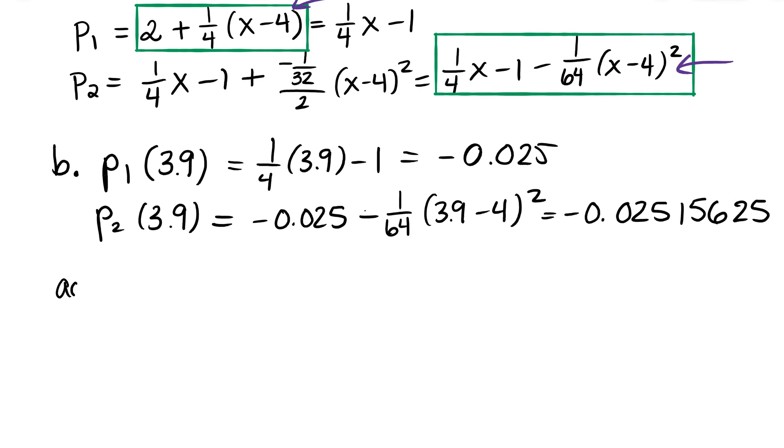Now the actual, luckily I have a calculator, my actual square root of 3.9, if I go ahead and do that, is - oh no, something went wrong here. What did I do wrong? Okay you guys, how do I know I did something wrong?